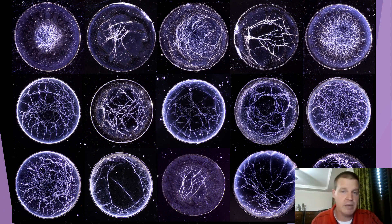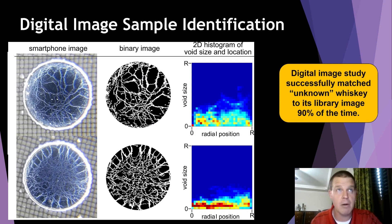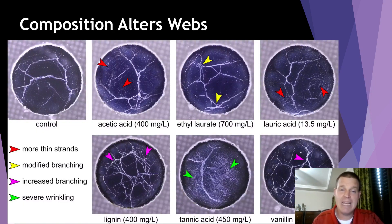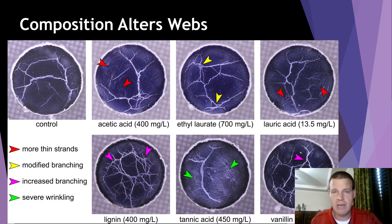We made a digital library of all the droplet patterns we had, and we were able to take an unknown droplet and — over 90% of the time — correctly identify which bourbon it was from our library. Additionally, if you added different chemicals such as vanillin, acetic acid, or lignin, those chemicals also influenced the web-like architecture of the pattern. We're currently investigating whether this can serve as an inexpensive method for chemical analysis of whiskey.